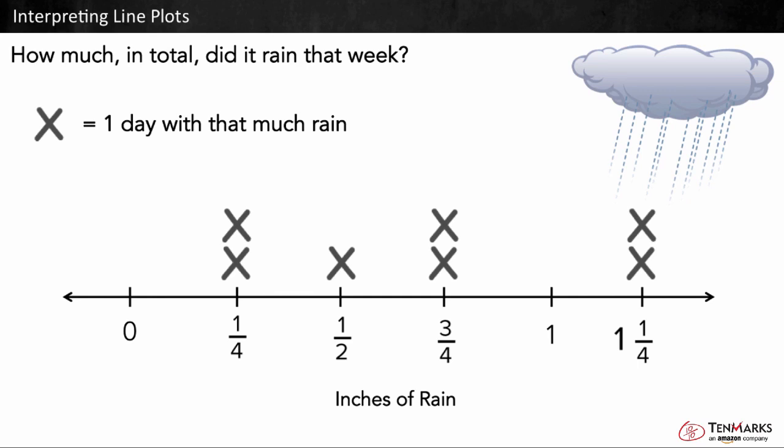To find how much it rained that week, we can add the inches of rain for each day and find the total. There are two x's above one-fourth, so there are two days when it rained one-fourth inch. We can add one-fourth plus one-fourth. There's one x above one-half, so we can add one-half as well.